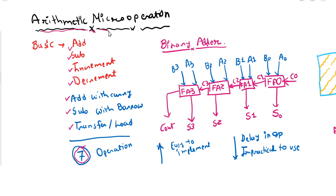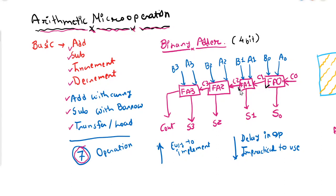Arithmetic Micro operations help us to manipulate data mathematically. As a simple example, let us look at the binary adder-subtractor. Here we are trying to construct a four-bit binary adder. As you can see in the figure, we will take one, two, three, and four full adders.